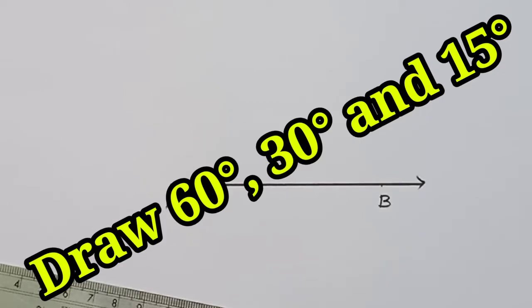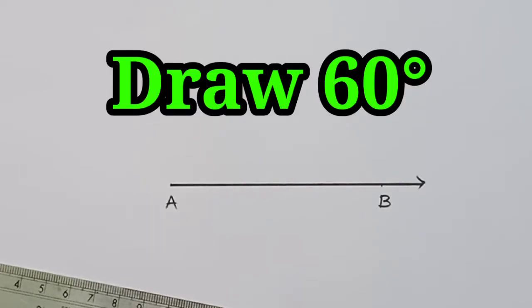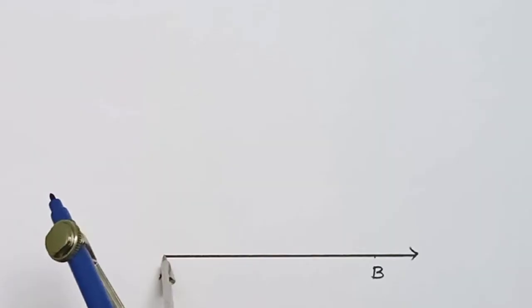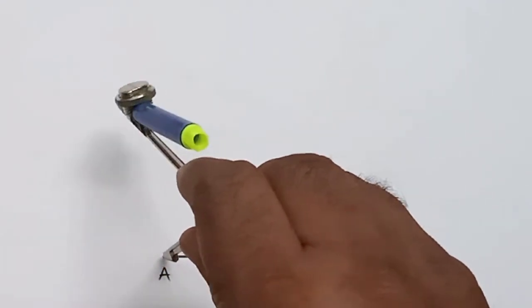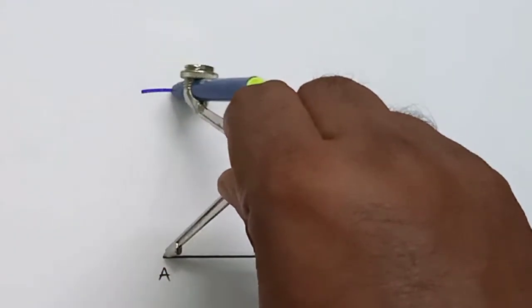How to draw 60 degree angle on the end point of the given ray AB. To draw the angle 60 degree, place the pointer of the compass on the end point A and draw an arc of any radius.